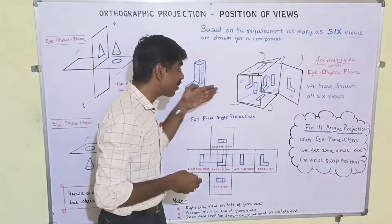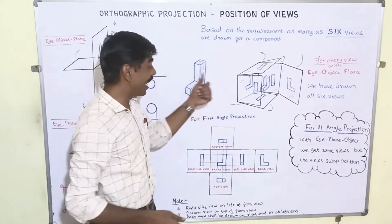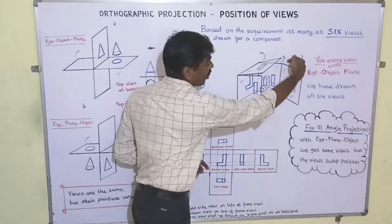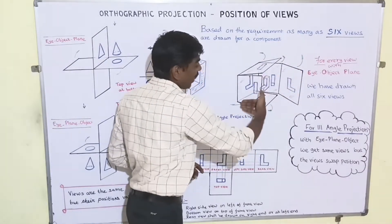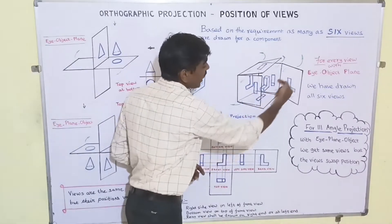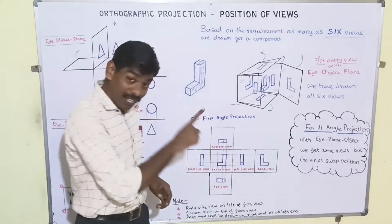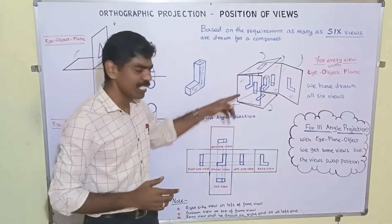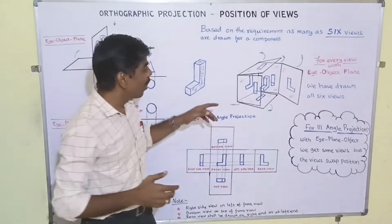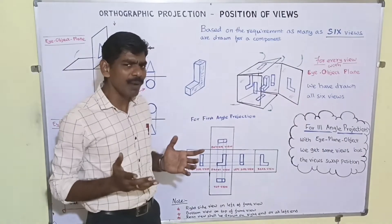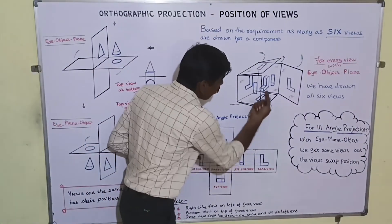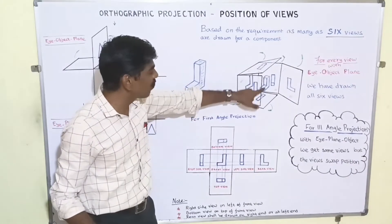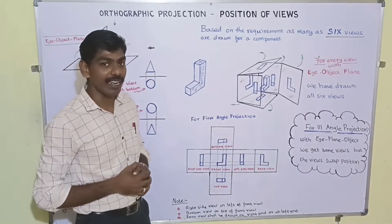When looking from the left side using eye-object-plane, the left side view is obtained on that face. Looking from the right side, eye then object then plane gives us the right side view. In some cases we get only a rectangular view with hidden edges shown as dashed lines. Looking from the bottom — eye, object, then plane — the bottom view is obtained, and again some edges are marked with dashed lines.